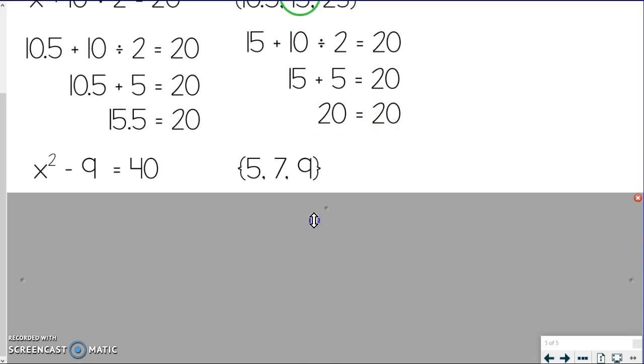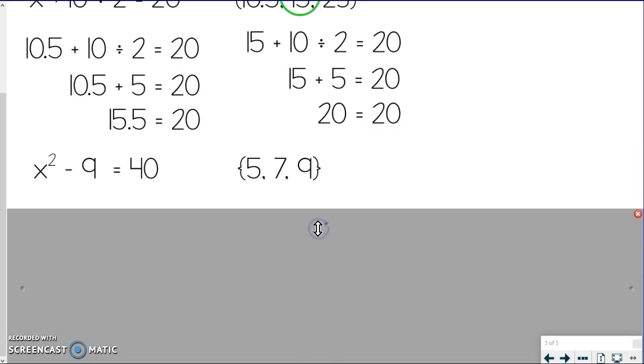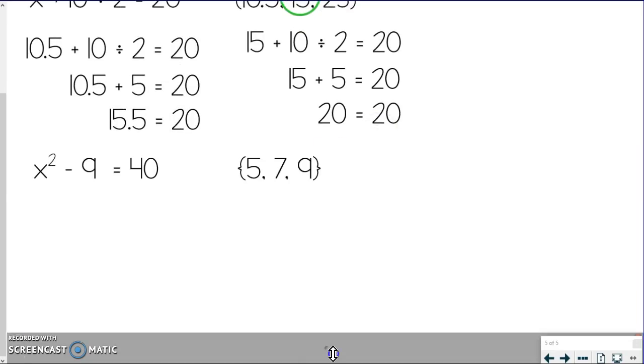All right. Let's try one more. So we have x squared minus 9 equals 40. And we're trying to see if 5, 7, or 9 end up being the solution. So, again, you can start with whatever you want, but we're going to start with 5 for now. You can choose to do something different when you do the practice. So I'm going to substitute 5 in for x first.